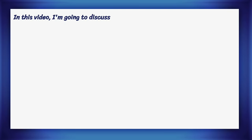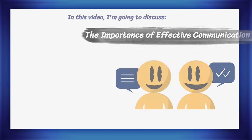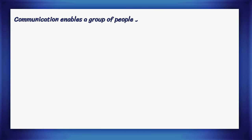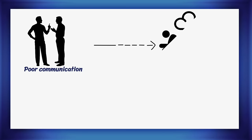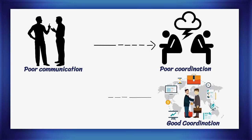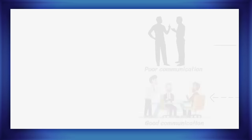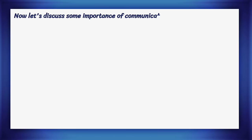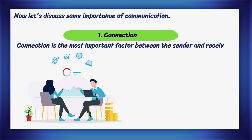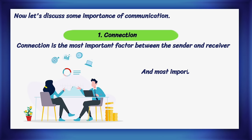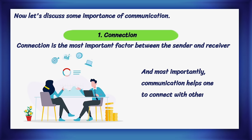Now let's discuss the importance of effective communication. Communication enables a group of people to think and act together. Without communication, there will be no organization. Poor communication leads to poor coordination, and cooperation depends on communication. Connection is the most important factor between the sender and receiver. Without connection, no one can build any relationship with others, and communication helps one to connect with others.